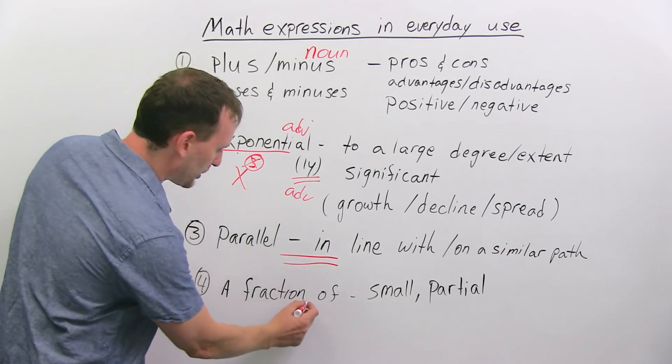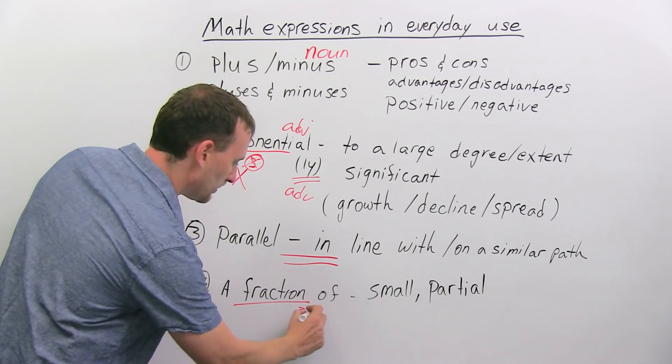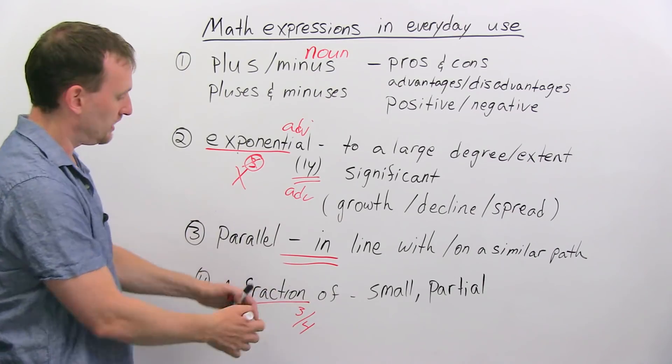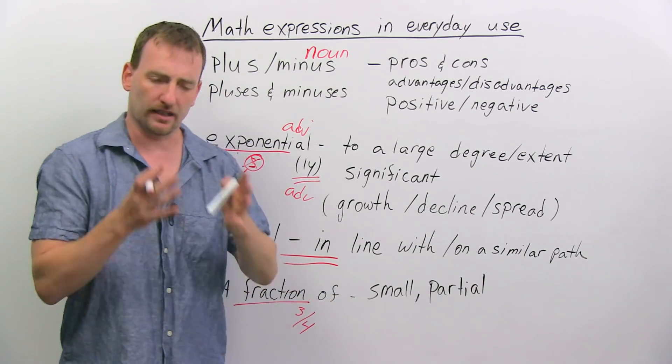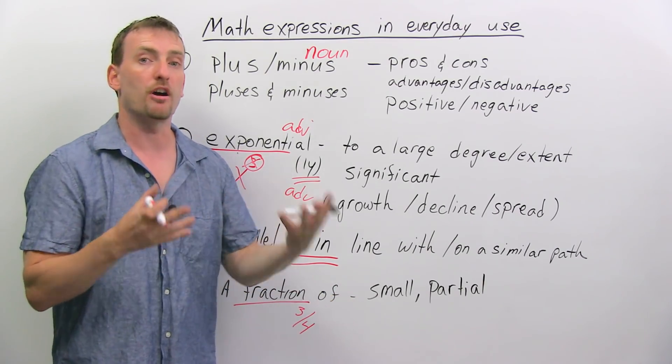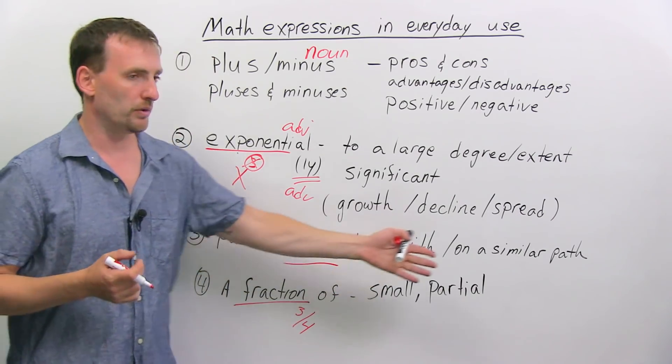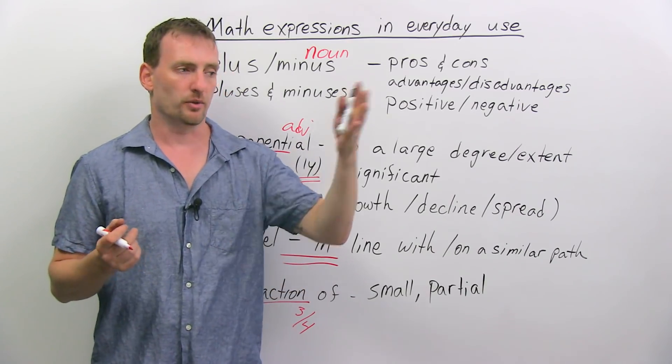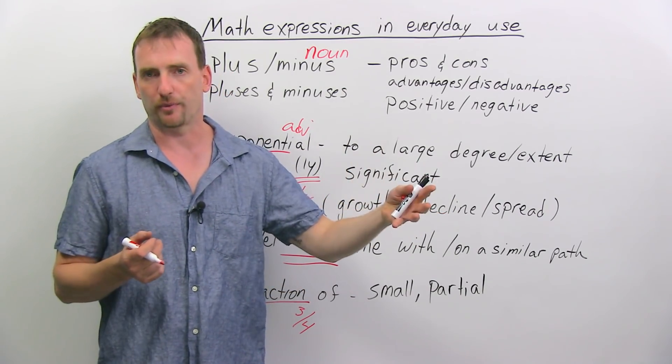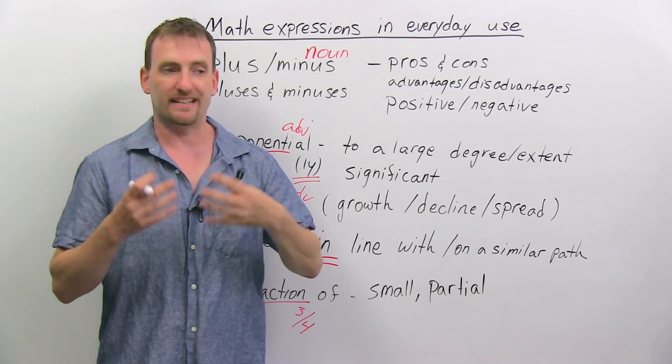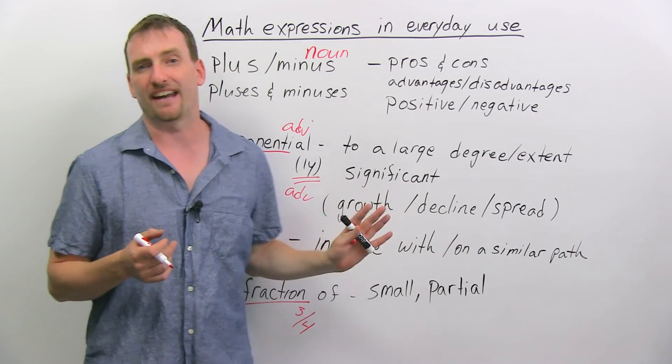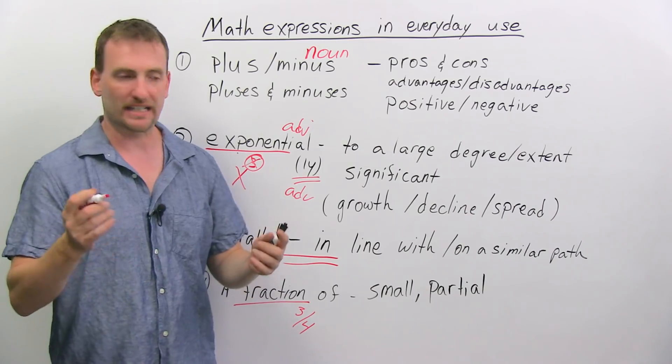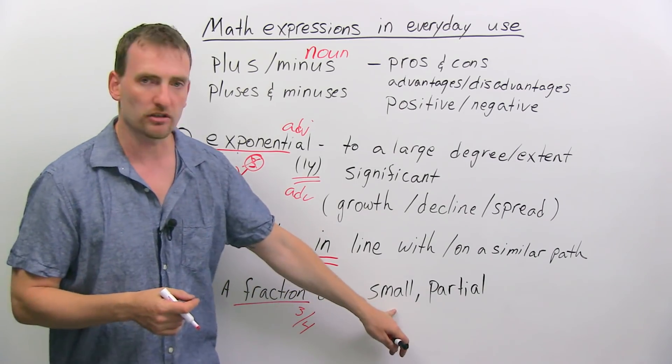A fraction of. So a fraction is, for example, a number over a number, that's a fraction. When we say a fraction of, we're saying a small amount of or a partial amount. So if you're looking at two companies who create software. This company creates very good software, but my company creates equally good software, but at a fraction of the cost, means much cheaper, much lower, right? A smaller or a partial.